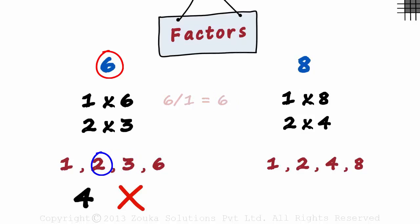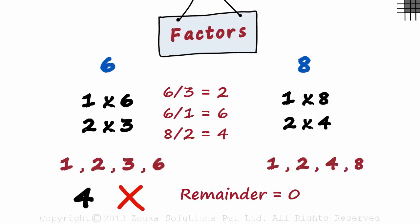If you divide 6 by 1, you will get 6 as the quotient. If you divide 8 by 2, you will get 4 as the quotient. In all the cases, the remainder is 0.